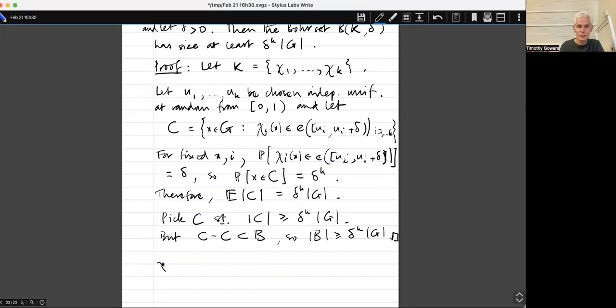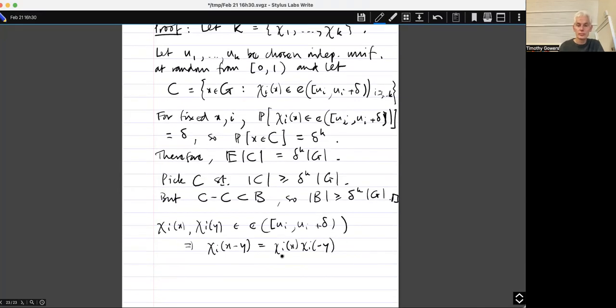But a little bit of rough working would be to say that if Chi i of X belongs to, and Chi of Y both belong to E of Ui Ui plus delta, then Chi i of X minus Y, which equals Chi i of X Chi i of Y, which I call it Chi i of minus Y, actually I think it's a little bit clearer.